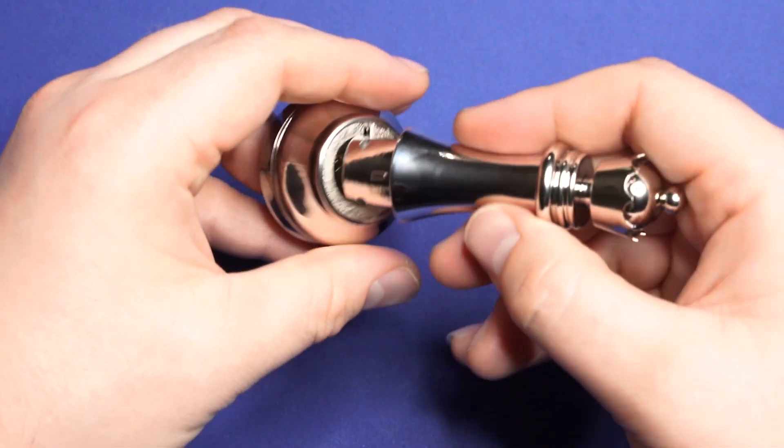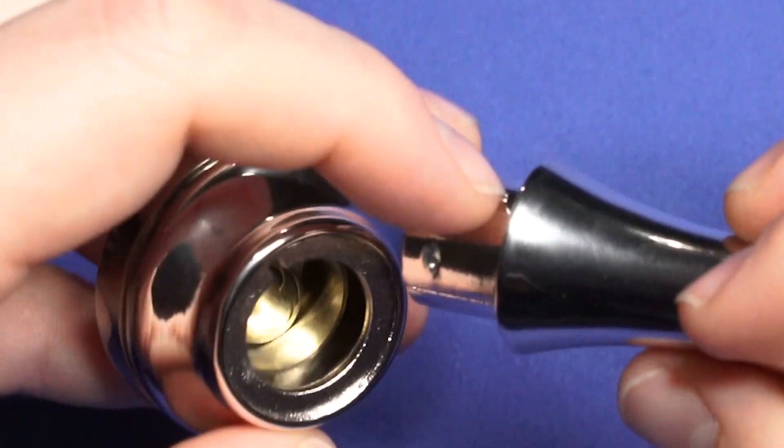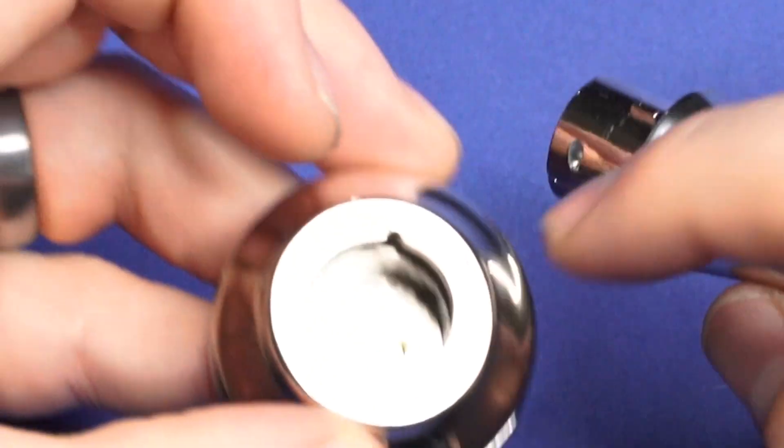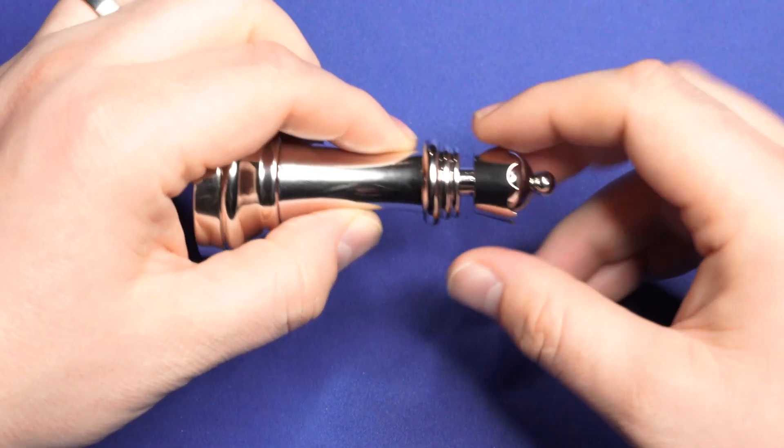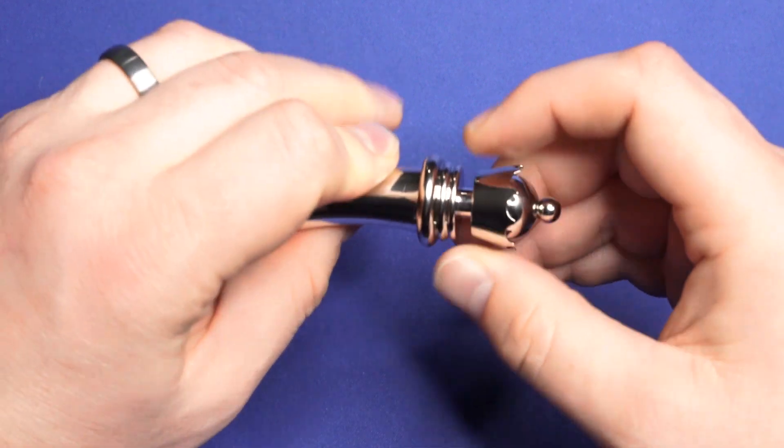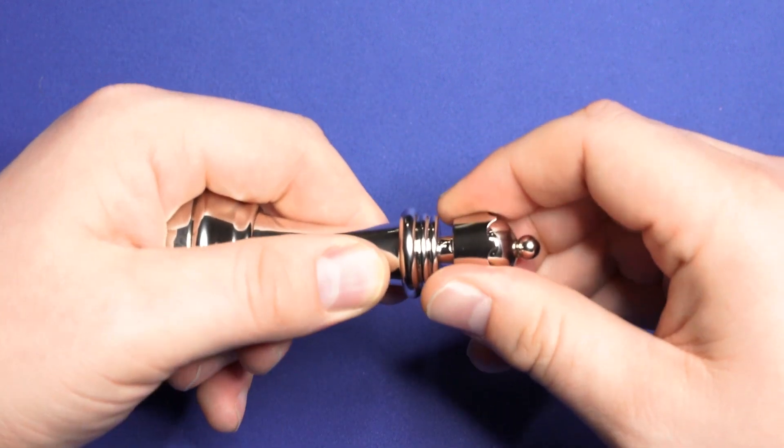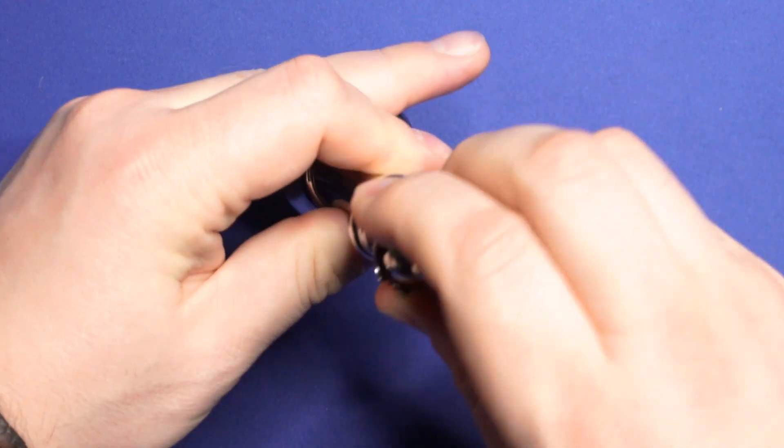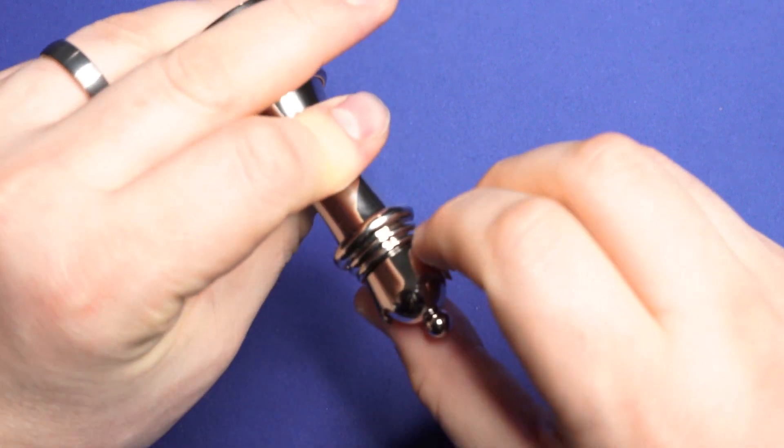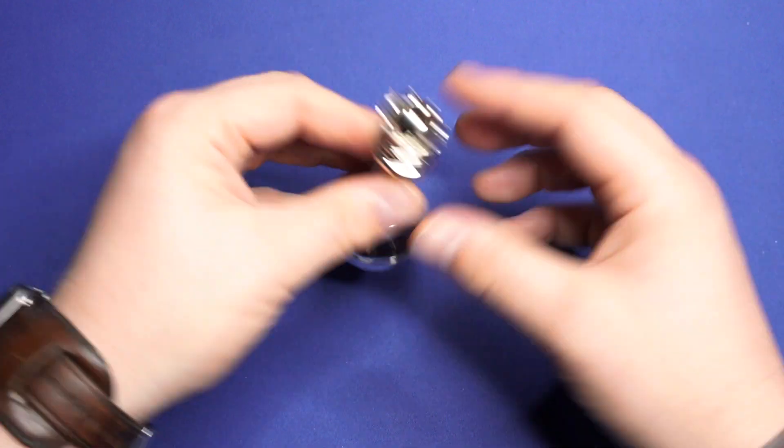To put it back together, it's fairly simple. You're going to put the bottom back on. You're going to make sure that this notch right here goes into that hole. And to seal up the top part, you're going to have to get the internal locking mechanism back. There you go. So now the puzzle is put back together.